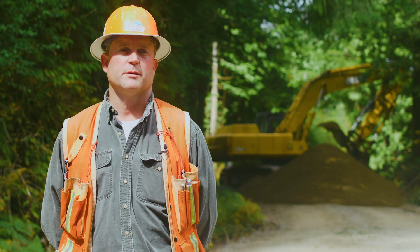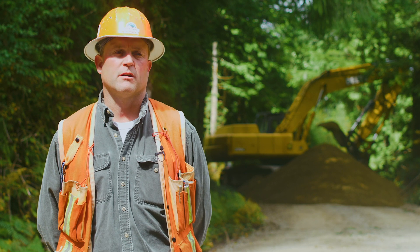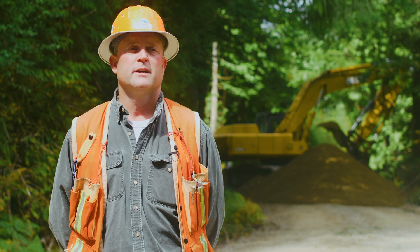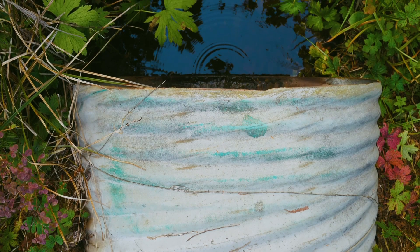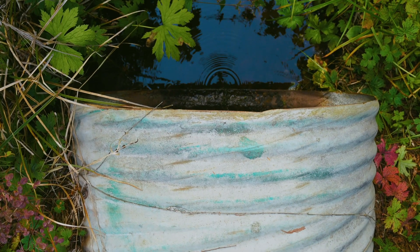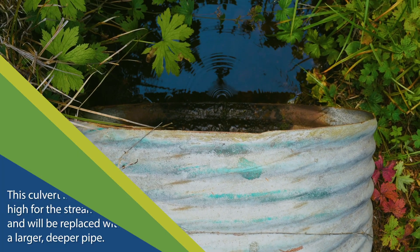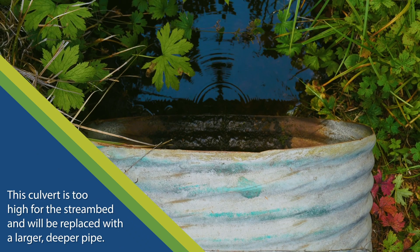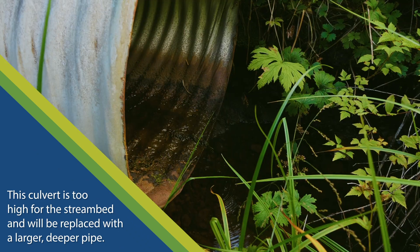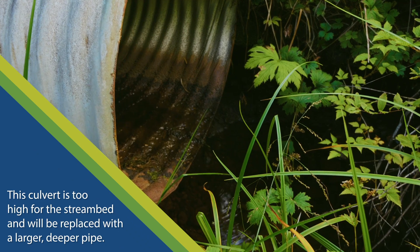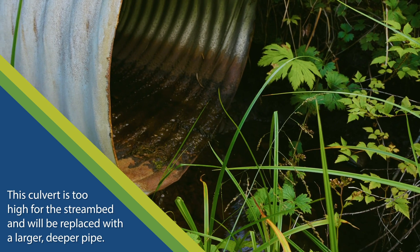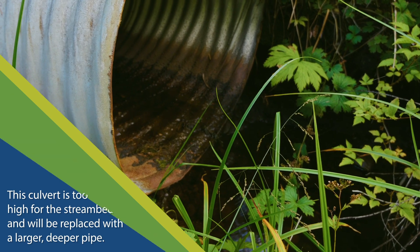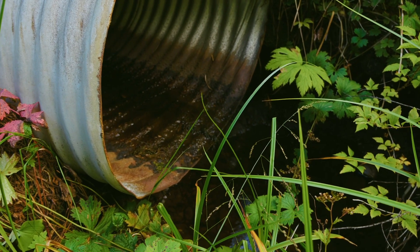Identification of these structures that need to be fixed are typically identified by the outfall of the culvert. Typically the outfall of the culvert has an elevation difference between what the natural water level is and what the actual stream level is.